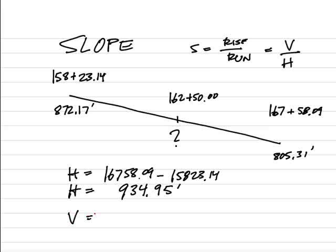The difference will be 805.31 minus 872.17, and thus that difference works out to be a negative 66.86 feet.